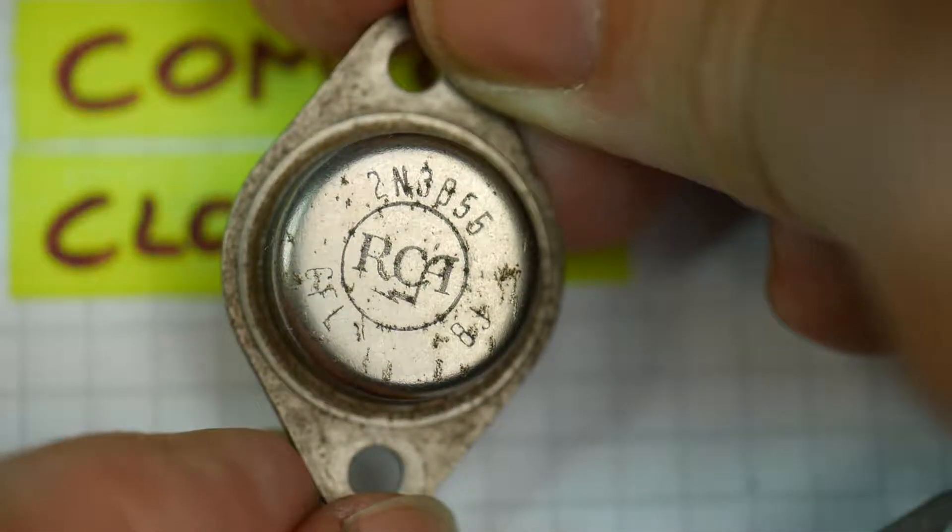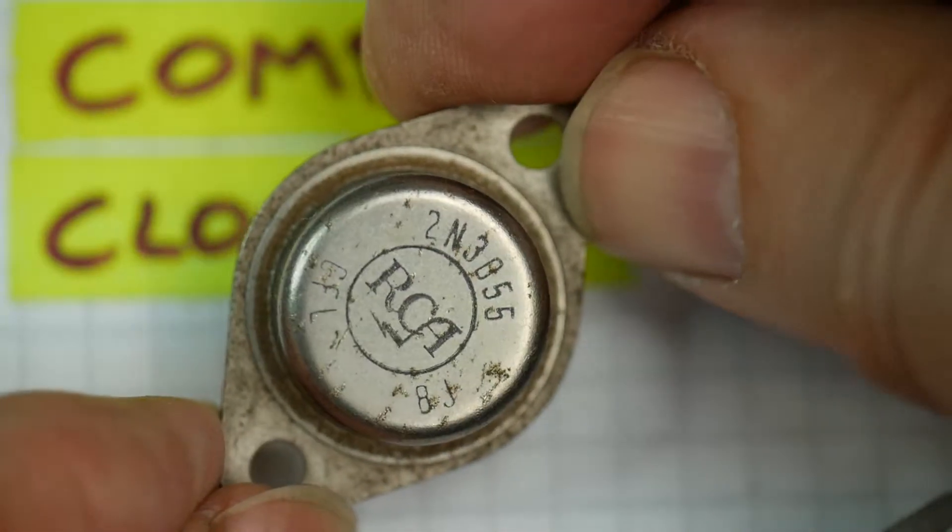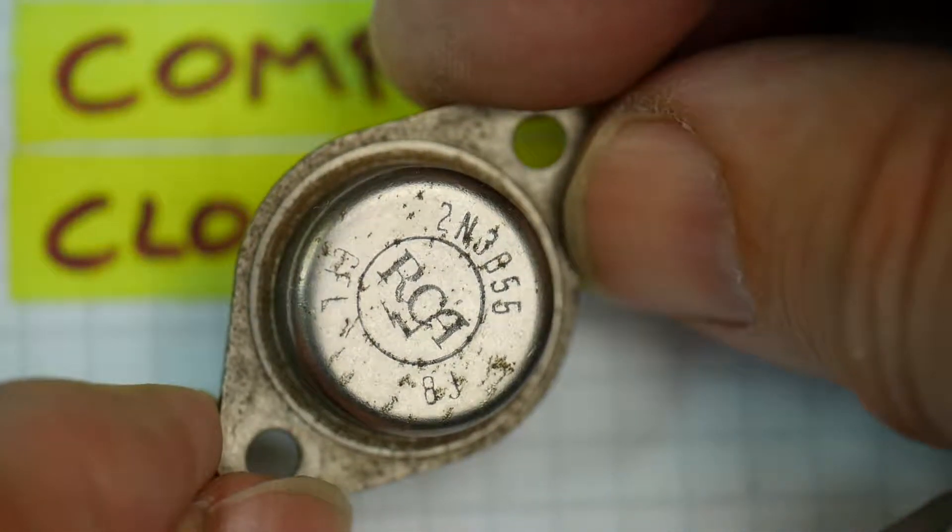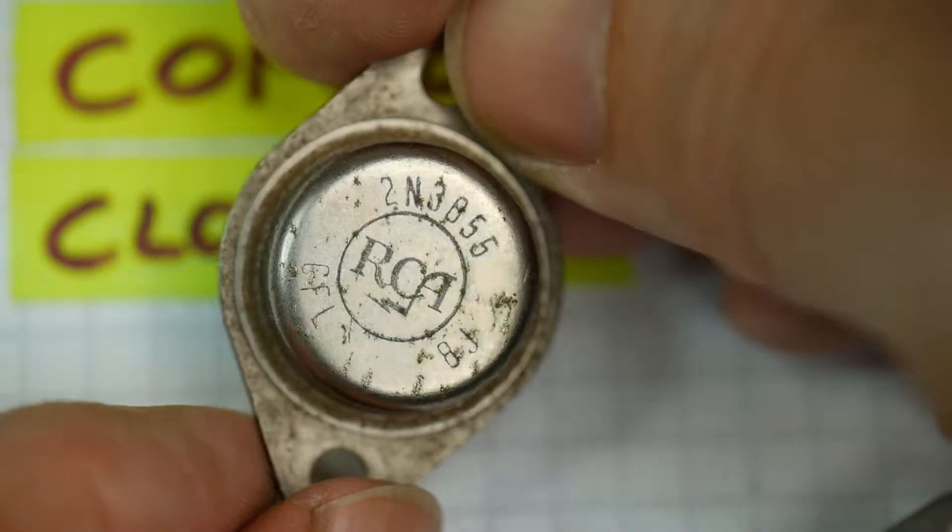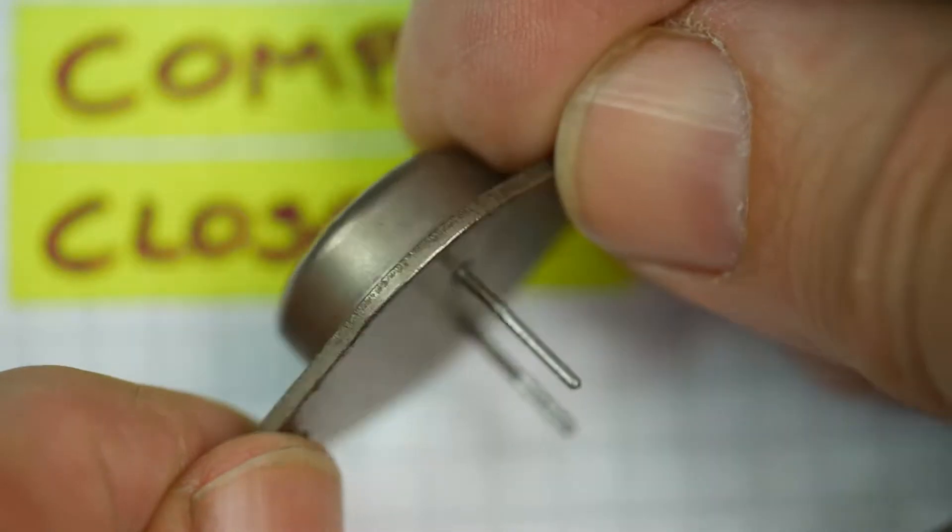This is a 2N3055 NPN power transistor, silicon, 115 watts or something, the rating of these things. Can't make out a date code on that, but you can see from the rustiness of it it's quite an old one.